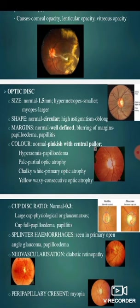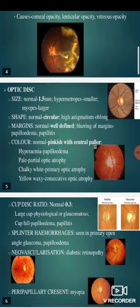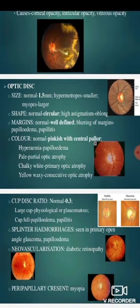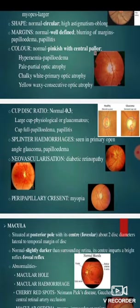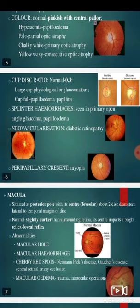Normally the color of the optic disc is pinkish with central pallor. In case of hyperemia there will be papilledema. It will be pale in color in case of partial optic atrophy, chalky white in case of primary optic atrophy, and yellow waxy in case of consecutive optic atrophy. Normally the cup-disc ratio is 0.3. There will be a large cup in physiological or glaucomatous conditions, whereas the cup will be full in case of papilledema or papillitis.